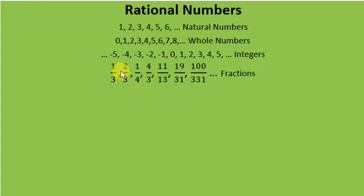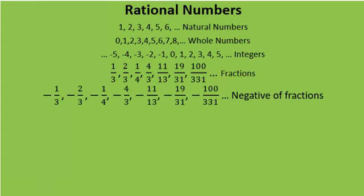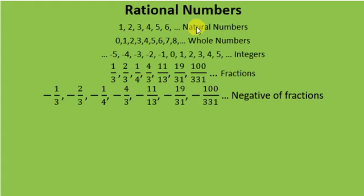Similarly, you might have seen numbers of the type 1 by 3, 2 by 3, 1 by 4, 4 by 3, 11 by 13, and so on. We call these fractional numbers, or simply fractions. Now we are going to add some more numbers in this group — that is, minus 1 by 3, minus 2 by 3, minus 1 by 4, minus 4 by 3, and so on. These are the negative of fractions. You have already learned about these numbers: natural numbers, whole numbers, integers, fractions, and now also the negative of fractions.